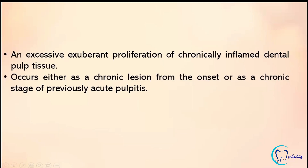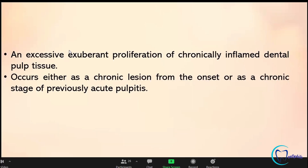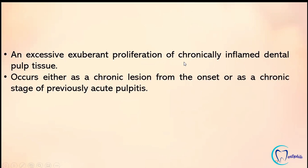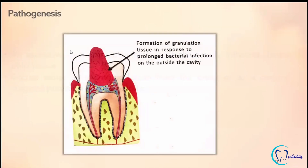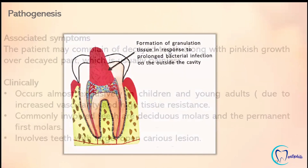Pulp polyp is defined as an excessive exuberant proliferation of the chronically inflamed dental pulp tissue. It occurs either as a chronic lesion from the onset or as a chronic stage of previously acute pulpitis. The pathogenesis involves prolonged bacterial infection leading to the formation of granulation tissue as a response.